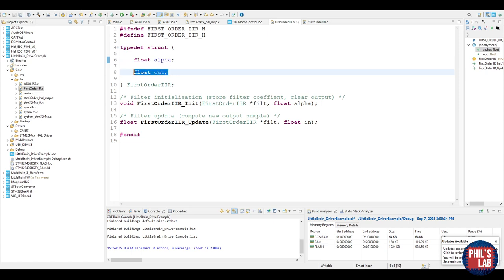I've made a really simple header file for this filter. I have a struct which includes my alpha which is my coefficient for my filter going from 0 to 1 and I have a float which is an output of the filter. I need to store my output because I'm using this for my feedback to compute the new output sample. Then I have an initialization routine and a filter update routine. That's pretty much it.